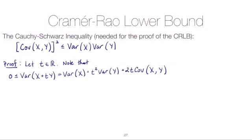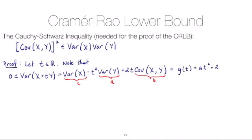To make life easier, let's label these quantities. We'll call the variance of X as C, the variance of Y as A, and the covariance of X and Y as B. So we end up with a quadratic function of t: G(t) = A·t² + 2B·t + C, which is greater than or equal to zero.